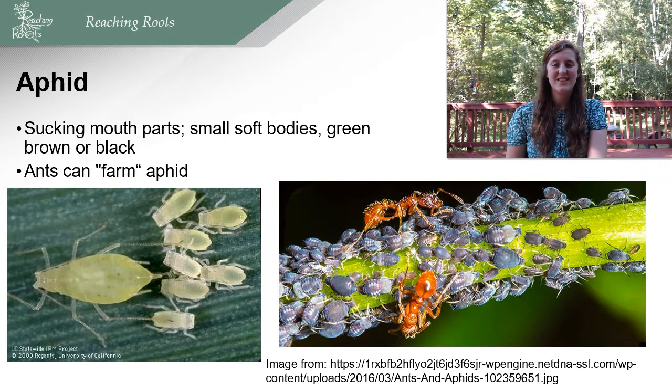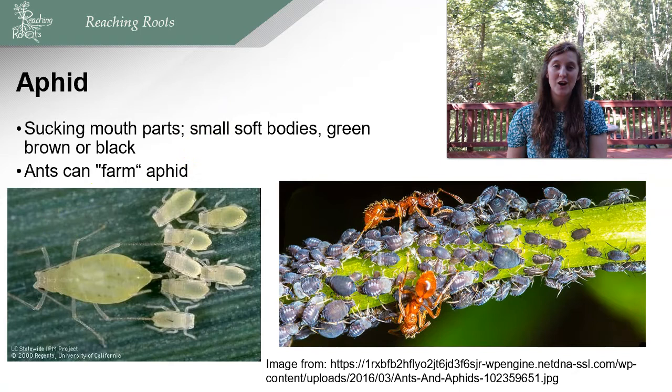Aphids are a huge pest for horticulturists and agronomists alike. They have sucking mouth parts, small soft bodies, and are usually green, black, or brown. Interestingly, ants can actually farm aphids. Aphids can cause huge damage, especially in soybean crops, and can infect a wide range of crops. However, aphids can be controlled with ladybugs, which like to eat them.